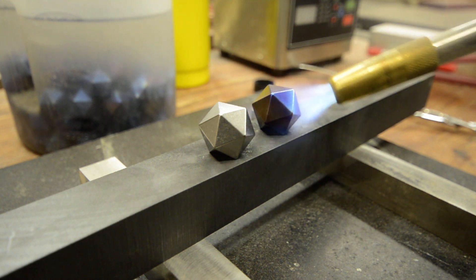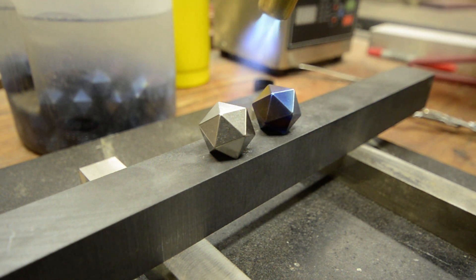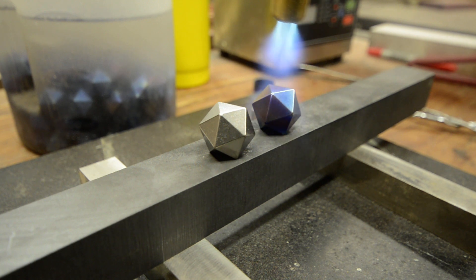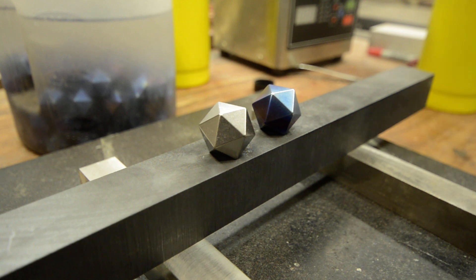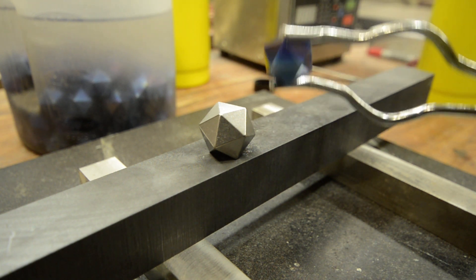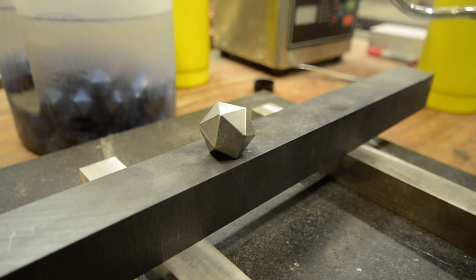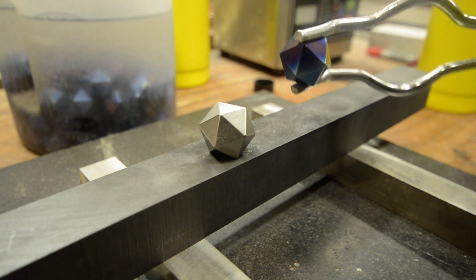So what we're using is a process called thin film interference. Basically the same thing that gives soap bubbles their rainbow colors. But instead of being a soap bubble, what we're doing is growing that thin crystalline oxide layer. And depending on how thick that oxide layer grows, it's the different colors that we get.